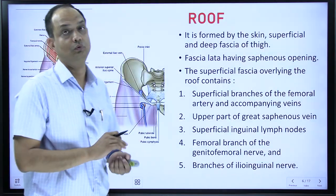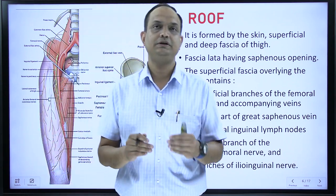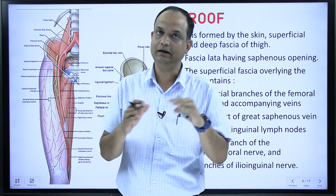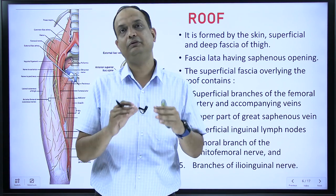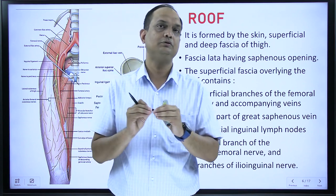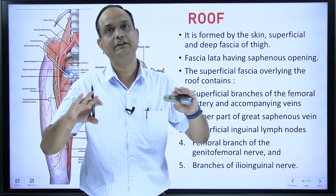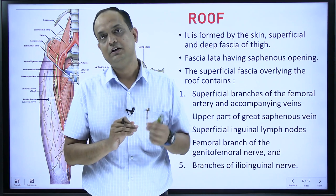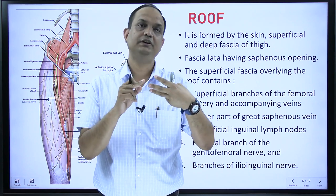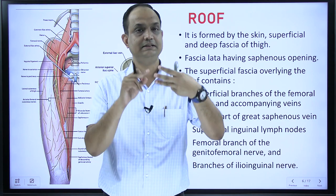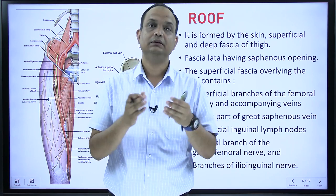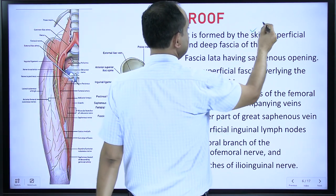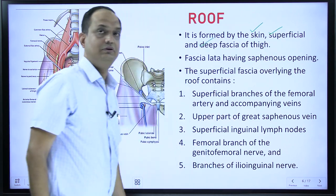The roof consists of the layers covering the femoral triangle. In the dissection, you first remove the skin, then below the skin you remove the fat containing superficial nerves and vessels. After removing the fat, you see a thick white layer known as deep fascia or fascia lata. So the roof is formed by skin, superficial fascia with cutaneous nerves and vessels, and the deep fascia of the thigh known as fascia lata.